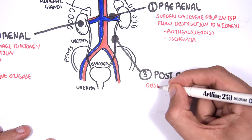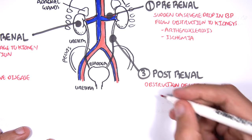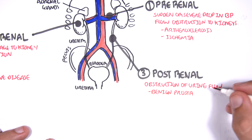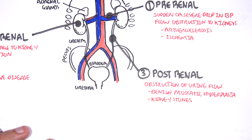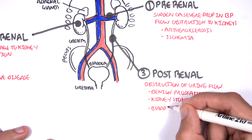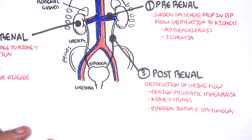And then the third one, the post-renal cause of acute renal failure, include mainly an obstruction of urine flow. So, this can be due to a benign prostatic hyperplasia, kidney stones, as well as some form of bladder injury or tumor.